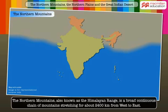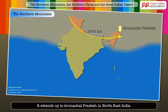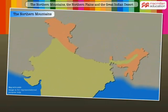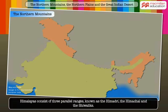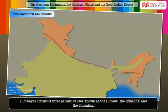The Northern Mountains, also known as the Himalayan Range, is a broad continuous chain of mountains stretching for about 2,400 kilometers from west to east. It extends up to Arunachal Pradesh in northeast India. The Himalayas are the youngest mountains of the world and consist of three parallel ranges, known as the Himadri, the Himachal and the Shivaliks.